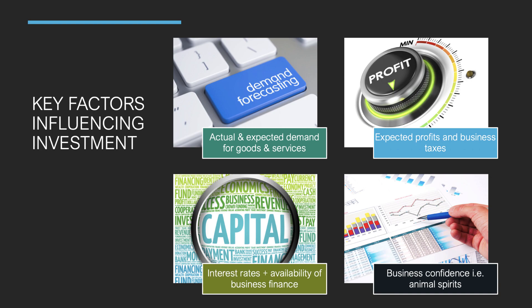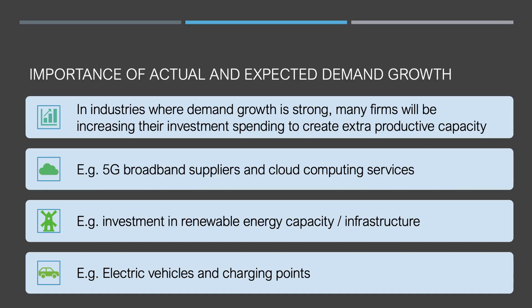Typically when interest rates go up, planned investment may take a dip. Expected demand growth is a really key variable — in industries where demand growth is strong, firms look to ramp up investment spending to create extra productive capacity. Current examples include 5G broadband suppliers and cloud computing services increasing capacity, investment surging in renewable energy particularly solar and wind power, and manufacturers investing in electric vehicles and e-bikes — including the charging point infrastructure needed.